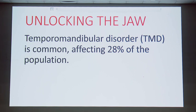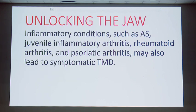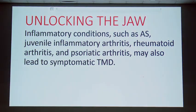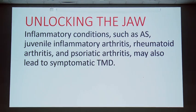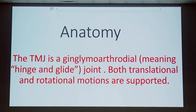TM joint disorders are common, affecting 28% of the population. Mechanical issues, called disc derangement, are the most frequent type of disorder, associated with abnormal anatomical relationships. Conditions like ankylosing spondylitis, juvenile rheumatoid arthritis, rheumatoid arthritis, and psoriatic arthritis may lead to symptomatic TM joint involvement. Developmental abnormalities, crystalline deposit disease, and neoplasms are also common sources of TM joint pathology.